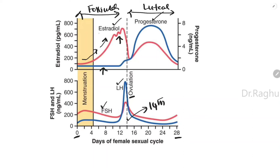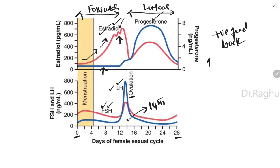Normally rising estradiol would cause negative feedback inhibition at the anterior pituitary and hypothalamus, reducing FSH and LH. However, when estradiol levels peak at their maximum, estradiol switches from negative feedback to positive feedback, meaning an increase in estrogen now causes an increase in both LH and FSH.